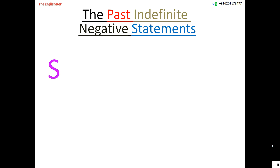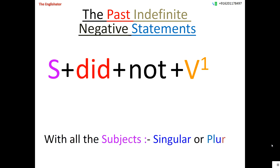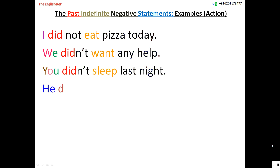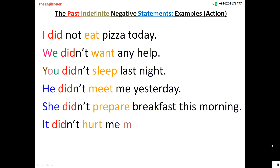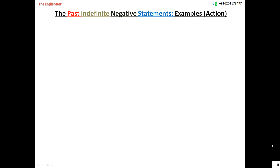Now let us see how to make the negative statements in this tense. You take the subject first and then use the auxiliary verb did + not + V1. Additionally, you can use other words if required. This formula is also applicable to all subjects, whether singular or plural. Examples: I did not eat pizza today. We didn't want any help. You didn't sleep last night. He didn't meet me yesterday. She didn't prepare breakfast this morning. It didn't hurt me much. They didn't play very well.